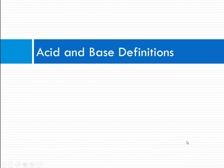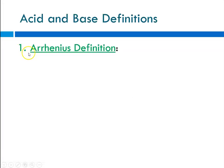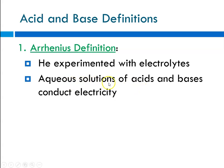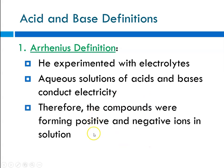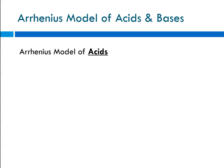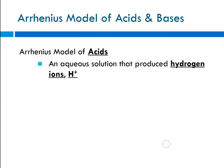Now we'll go through acid and base definitions — there are three definitions. The first and most familiar is from a gentleman named Arrhenius, who experimented with electrolytes. He noticed that aqueous solutions of acids and bases conducted electricity, meaning free ions were present. According to the Arrhenius model, an acid is defined as an aqueous solution that produces hydrogen ions, H⁺.